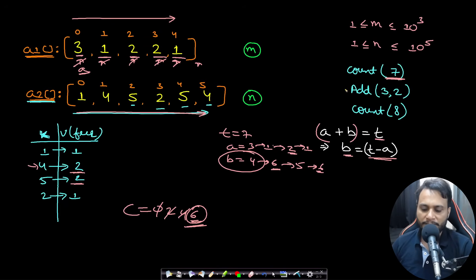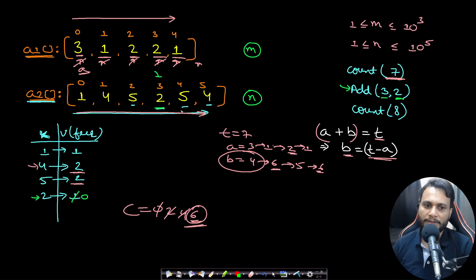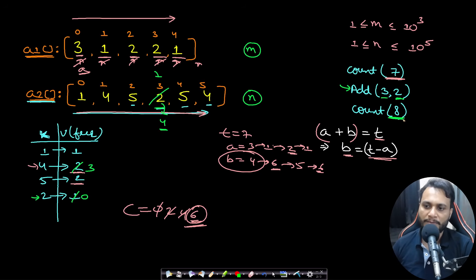For the add API, at index three we need to add value two. We don't directly update the array. Instead, we decrement the frequency of the old value (2 becomes frequency zero), then add the updated value (2+2=4) and increment the frequency of 4 to three. The hash map is now updated.